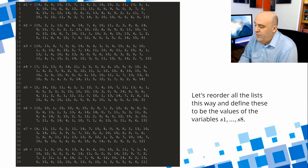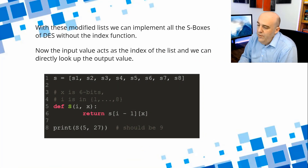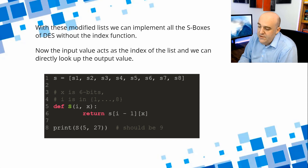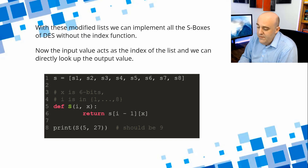If we reorder all the lists that way, they look the same numbers but in a new order: S1 through S8. The same numbers are in each list, just reordered so they can be accessed more naturally given an input value. Now we can implement the S-boxes of DES without the index function. Lowercase s is S1 up to S8, a list of lists. Capital S of I, X returns lowercase s[I minus 1] at X — not at index of X, just at X. Testing with S5 of 27 should give 9.